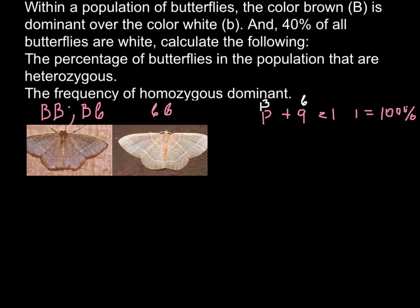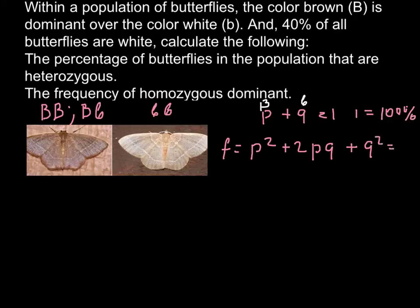Here is the Hardy-Weinberg formula itself: the frequency is calculated as p squared plus 2pq plus q squared, which equals 1. For p squared we have homozygous dominant, that is capital B capital B. For 2pq we have the heterozygous, capital B small b. And for q squared we have homozygous recessive, that is small b small b.